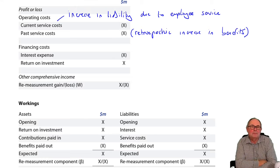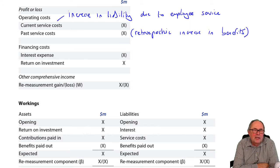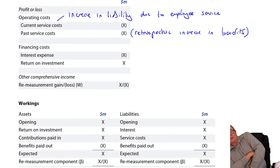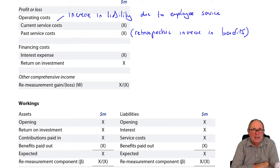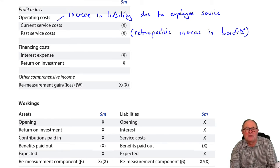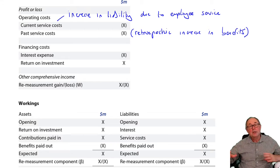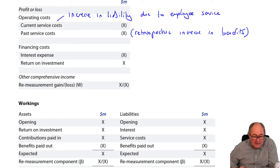Past service cost happens in the exam but doesn't really happen much in life. Imagine if you went into work tomorrow and your employer said, 'I'm going to give you a 5% pay rise' — you'd be very pleased. And then if they said 'I'm going to backdate it for five years', you'd think they'd been on the wacky-backy. It doesn't really happen — retrospective increases — but if it did happen, it's called a past service cost. We'll be told that number; it's a line in the P&L to debit. It's an expense.